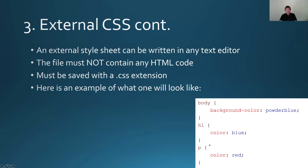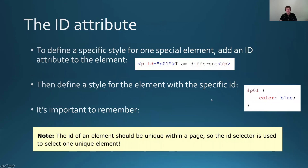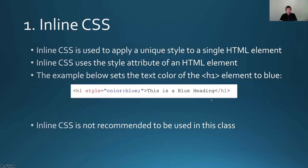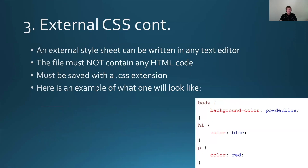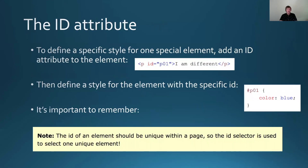I put a .css extension, start writing my selectors, start writing my blocks of code, change whatever attributes I want to change, and it will be loaded. You'll see the three different locations for CSS. Continue to the next video, and we'll talk about some different selectors that we can use in those internal and external style sheets.